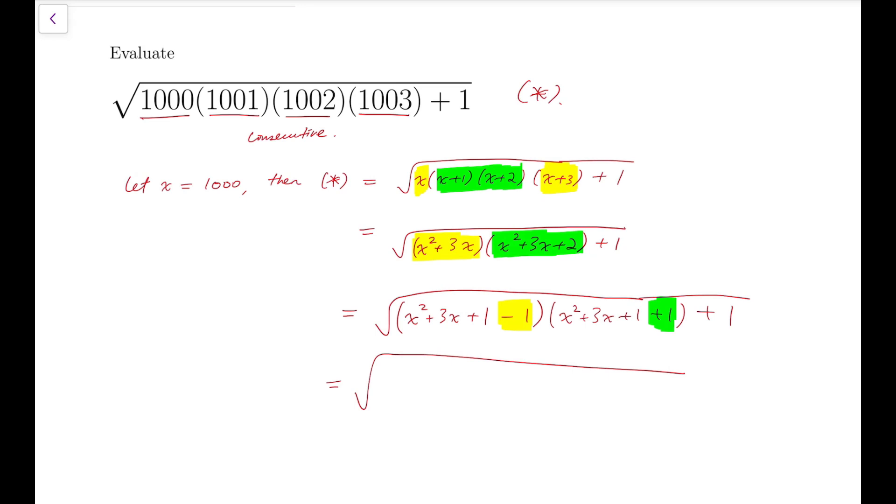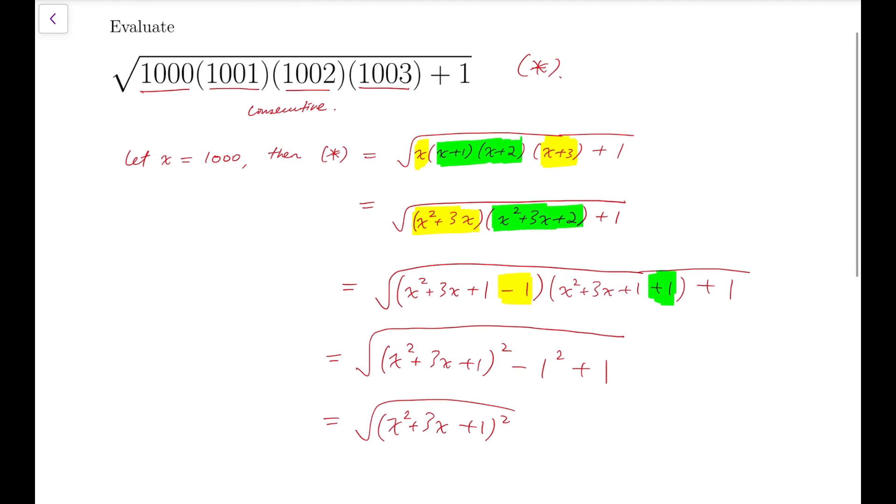Now, you can see that we have difference of squares. The factorized form of difference of squares, a plus b times a minus b. So I can further expand it, and it becomes x squared plus 3x plus 1 whole squared, minus 1 squared plus 1. Maybe I am trying to shorten the radical sign a bit. And this will become x squared plus 3x plus 1 whole squared, because the ones cancel out.